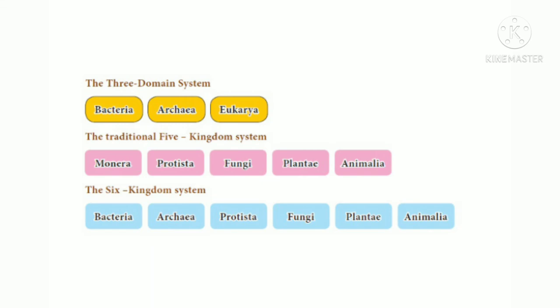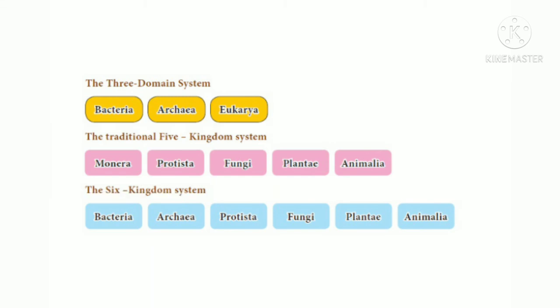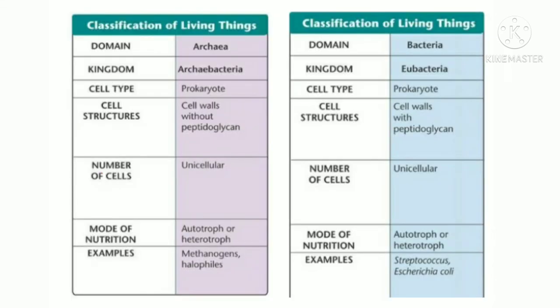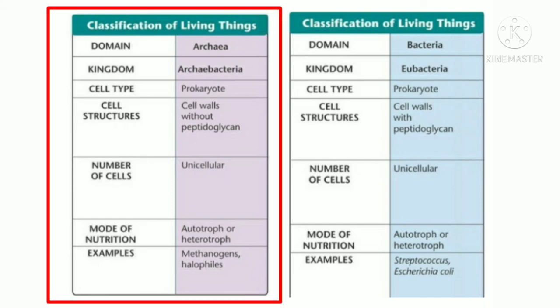Previously, the five-kingdom classification was used, given by R.H. Whittaker, in which Archaea and Bacteria were included under the Monera kingdom. The chart here shows a comparison between the three-domain, five-kingdom, and six-kingdom classification systems.